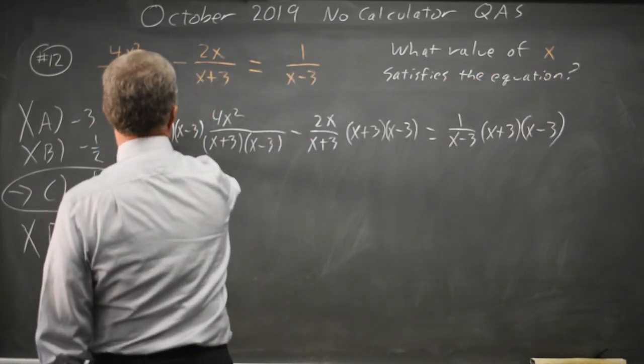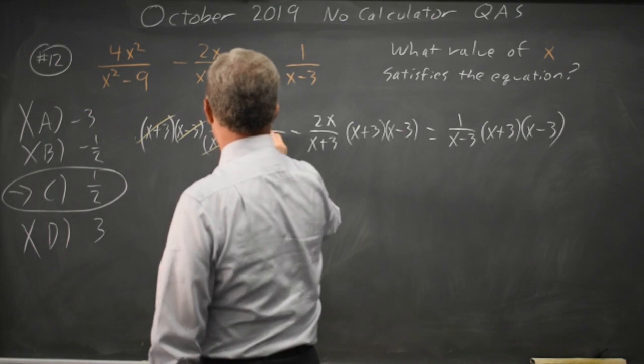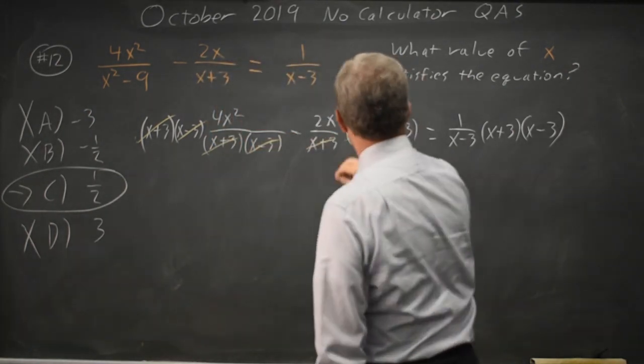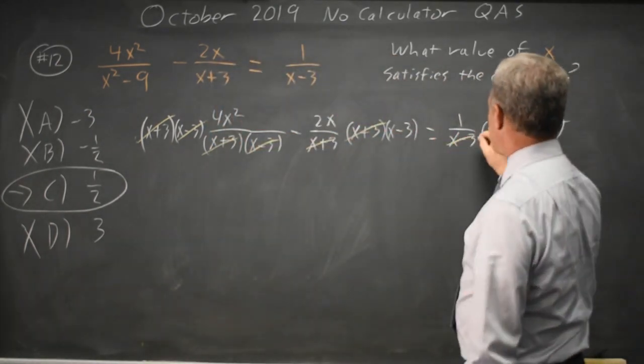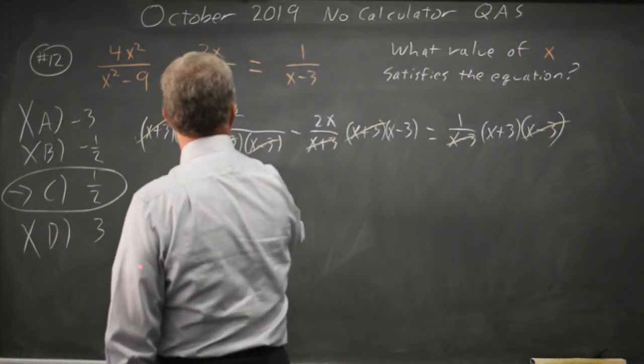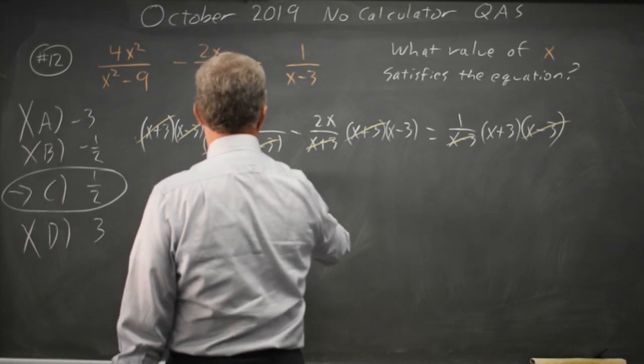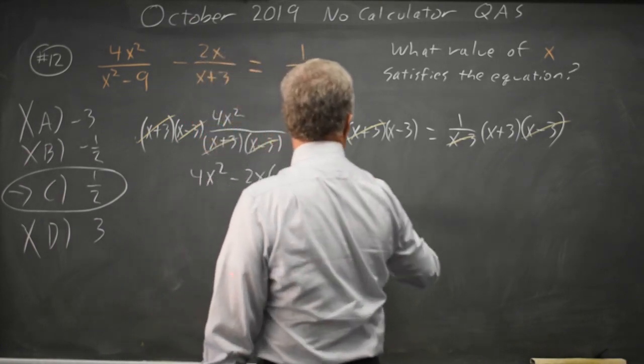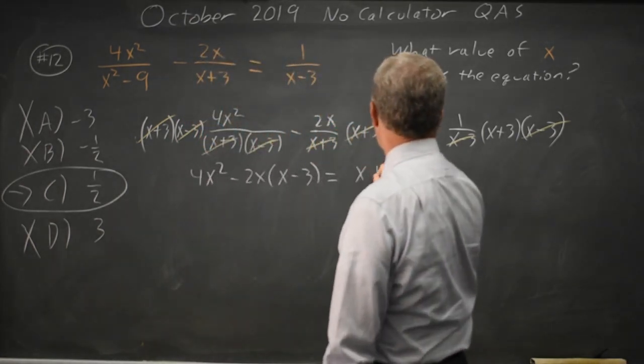x plus 3 over x plus 3 is 1, x minus 3 over x minus 3 is 1. So we have 4x squared minus 2x times x minus 3 equals 1 times x plus 3.